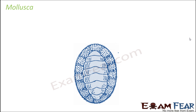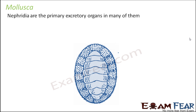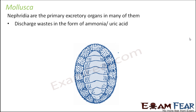The next phylum is molluscs. In molluscs, nephridia are the primary excretory organs in most of them. We have already discussed how nephridia perform the function of excretion. Their wastes are discharged in the form of ammonia or uric acid. When it is ammonia, a lot of water is eliminated. When it is uric acid, the excreta is almost solid — meaning minimum loss of water. In most cases, excretion also takes care of water balance and ionic balance by default.